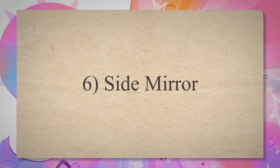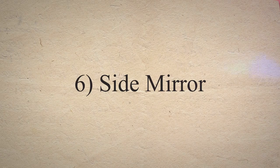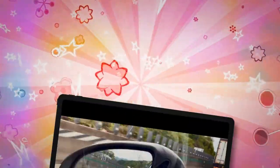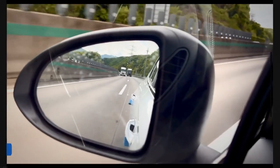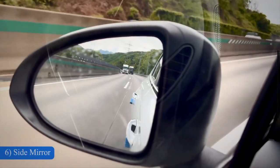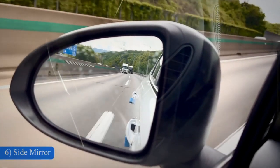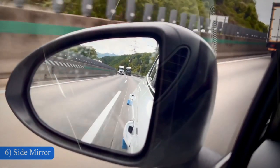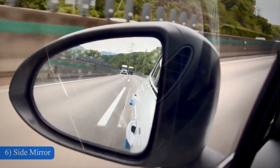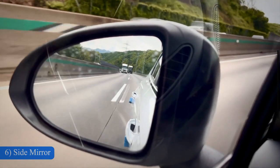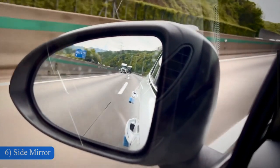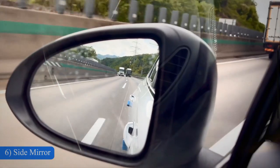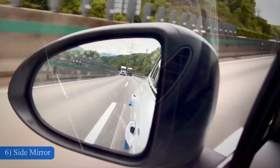6. Side Mirror. These are mirrors installed on the outside of the car. The side mirror allows the driver to look at the side areas of the car, areas out of the peripheral vision, and the rear of the car. The side mirror is used for the remote or manual horizontal or vertical adjustments to get the best suitable coverage for drivers of different heights and seating positions.